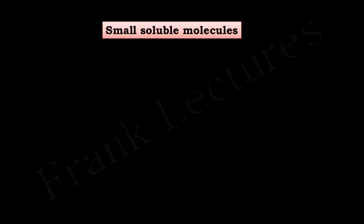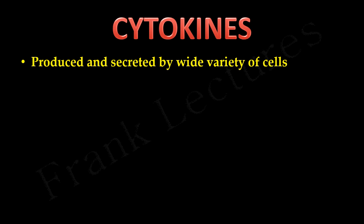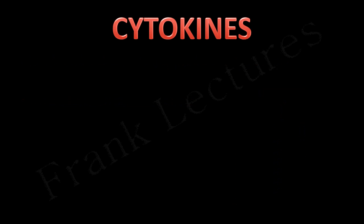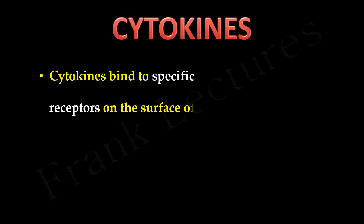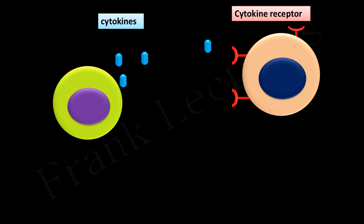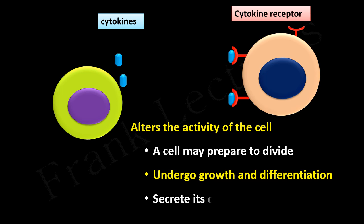The communication within the immune system is mediated by small soluble molecules known as cytokines. Cytokines are produced and secreted by a wide variety of cells and act as intercellular mediators. Once released, cytokines bind to specific receptors — called cytokine receptors — on the surface of other immune cells. This generates an internal signal that alters the activity of the cell, causing it to divide, undergo growth and differentiation, or secrete its own cytokines.